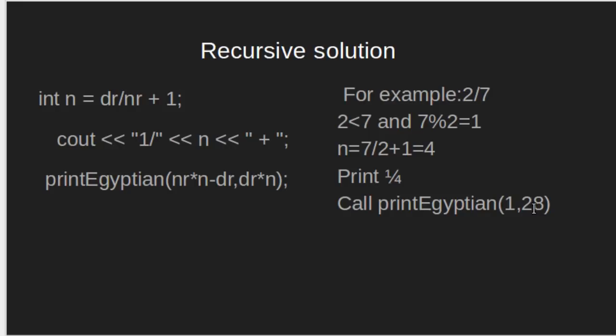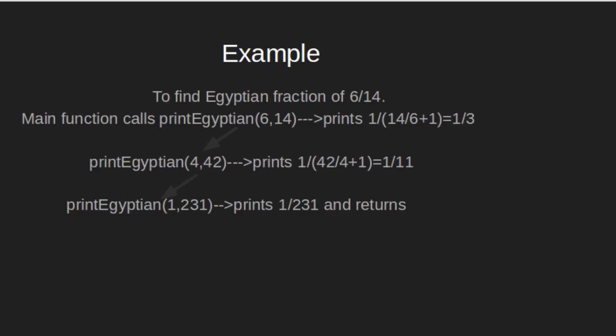For example, to find Egyptian fraction of 6 by 14, main function calls printEgyptian 6, 14 and this function prints 1 by 14 by 6 plus 1, which is 1 by 3. Then, it calls printEgyptian for the remaining portion, that is 4 by 42.